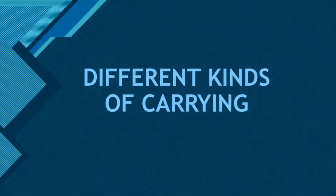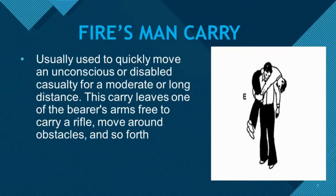Under one-man carry, we have different kinds. The first is what we call the fireman's carry, as seen in the picture. It is usually used to quickly move an unconscious or disabled casualty for a moderate or long distance. This carry leaves one of the bearer's arms free to carry a rifle, move around obstacles, and so forth.